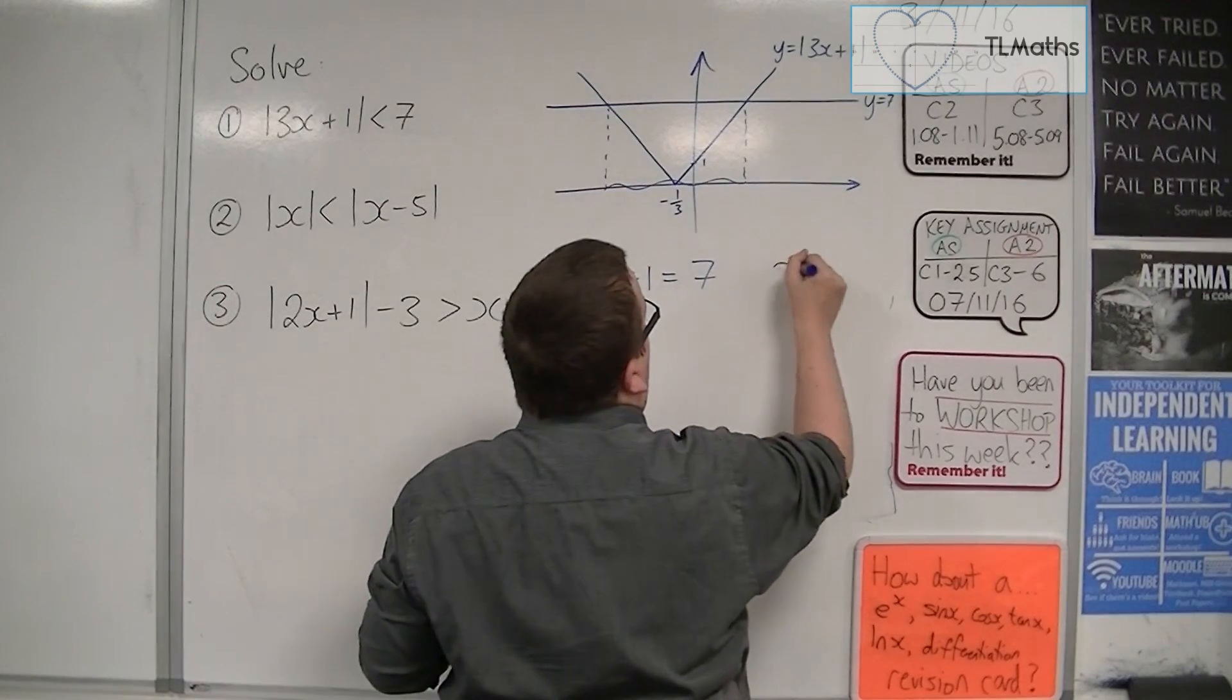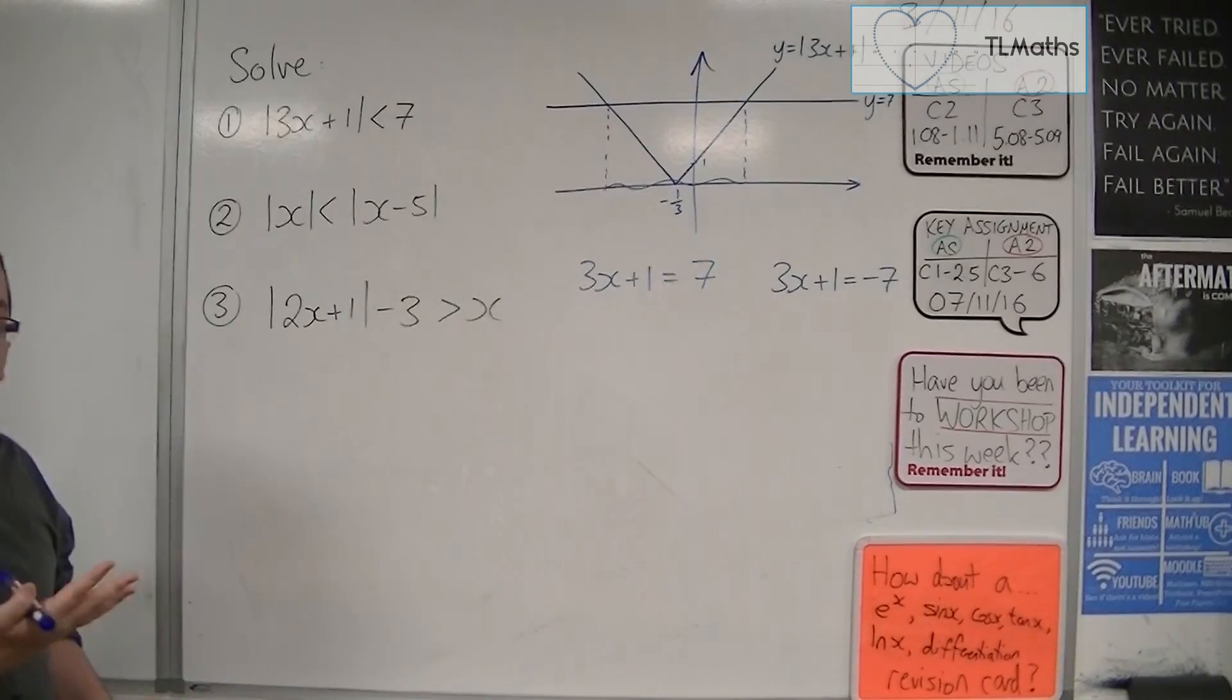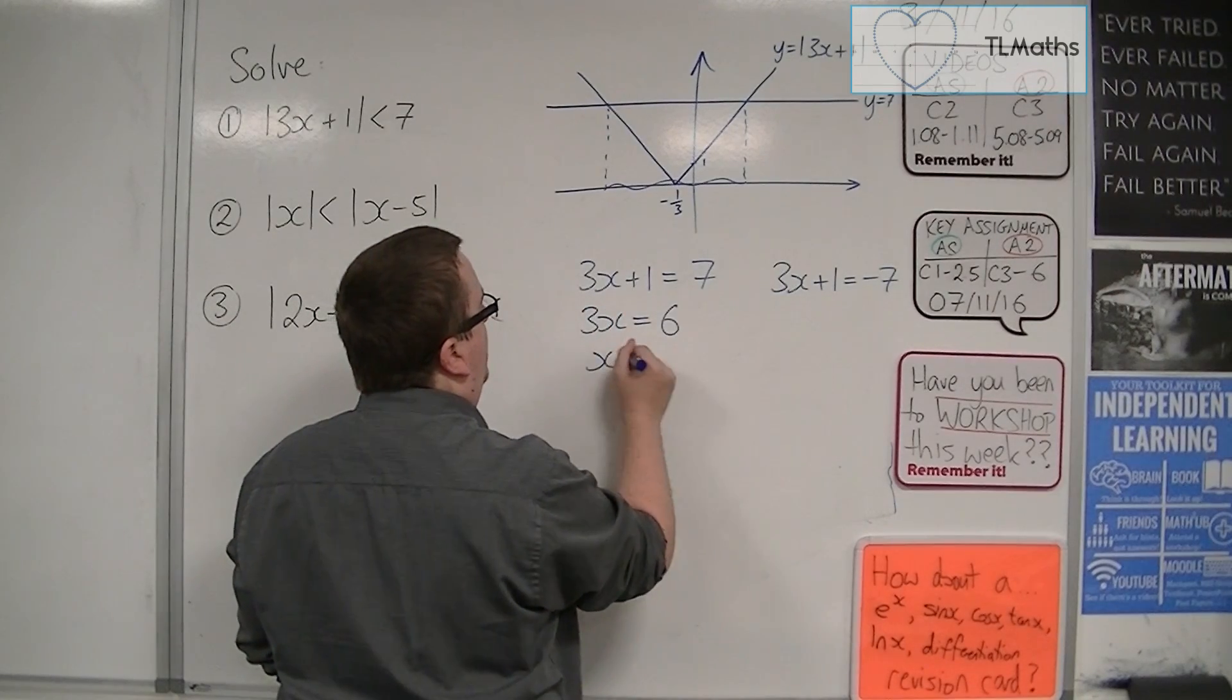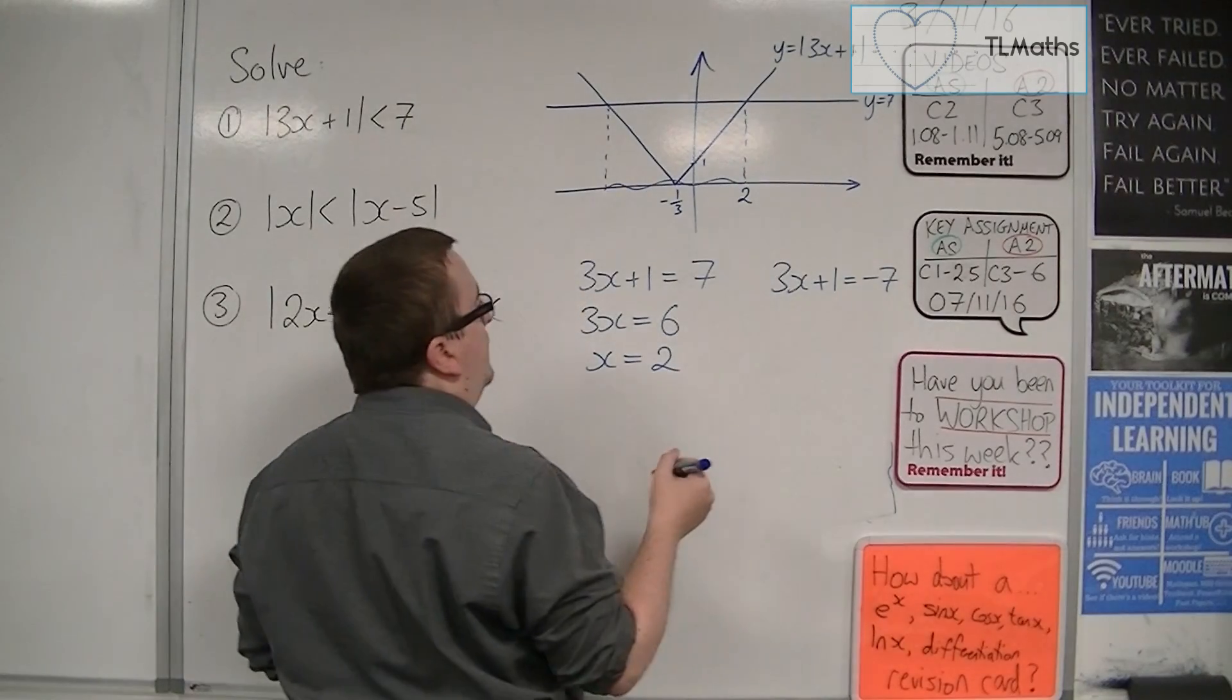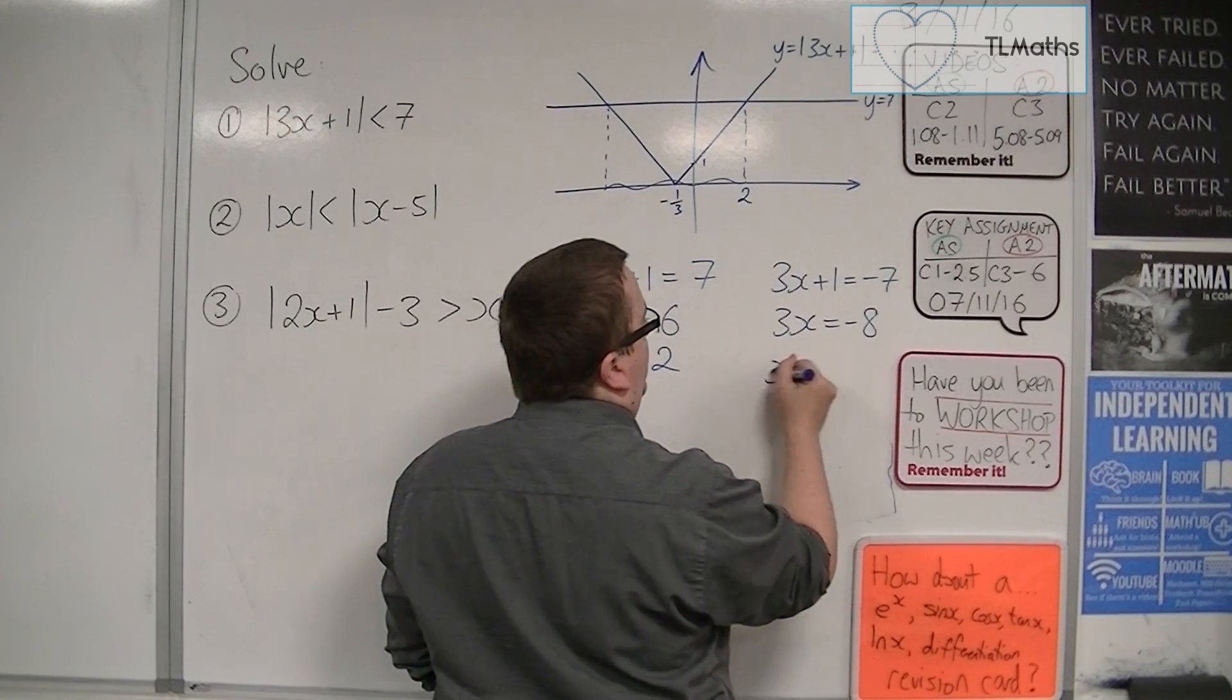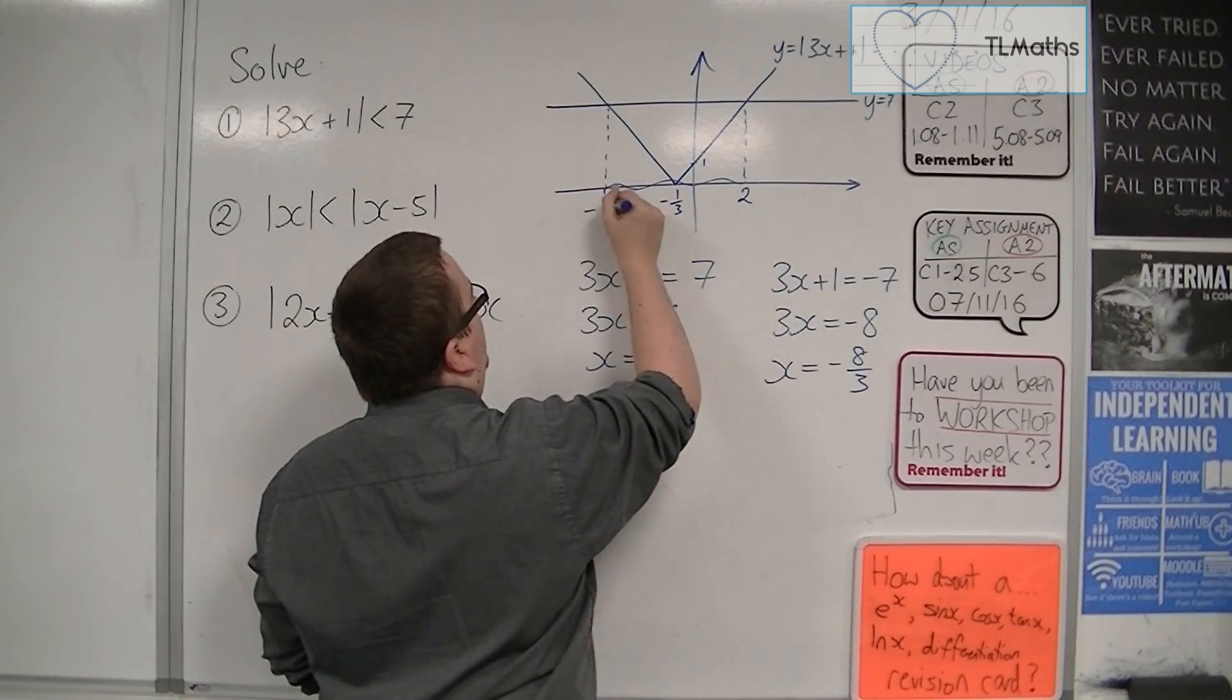Or I could just solve 3x plus 1 equals minus 7, so just change the sign of one side. Take 1 from both sides and then divide both sides by 3. So x equals 2. So that point is 2. Take 1 from both sides here and we're going to get minus 8. Then divide both sides by 3, so we get minus 8 thirds. So this point is minus 8 thirds.